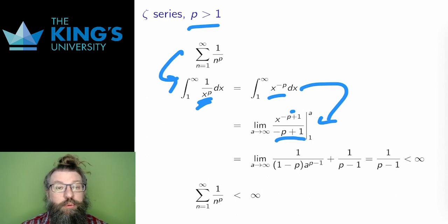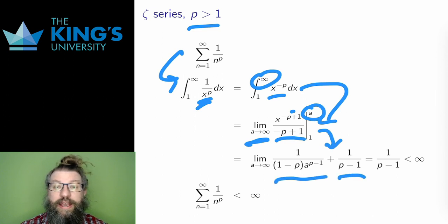Well, this is an improper integral, so I take the limit of the upper bound as it goes to infinity. I evaluate on the bounds at 1 and a, and subtract the evaluation at a minus the evaluation at 1. And I state the limit.